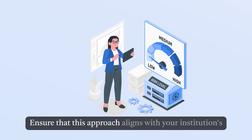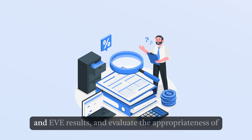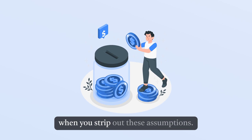Step 8: Assess any other assumptions that may be impacting your results. Obtain a breakdown of your contractual repricing gap and EVE results and evaluate the appropriateness of assumptions that may be masking open positions. Determine the maximum exposure to interest rates increasing when you strip out these assumptions.